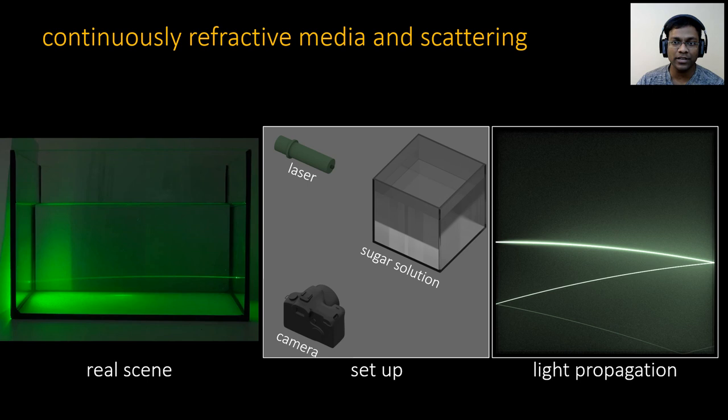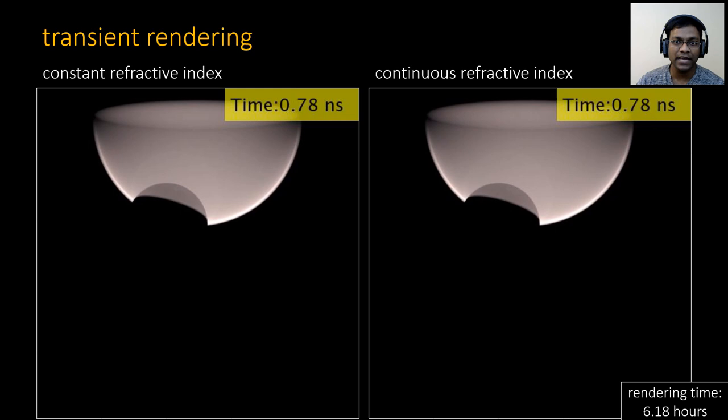This is a simple scene containing an aquarium filled with sugar water. Due to varying concentration of the sugar in the water, the refractive index is also continuously varying. A laser beam propagating through the solution refracts and continuously scatters, resulting in a curved light trajectory as shown on the right.